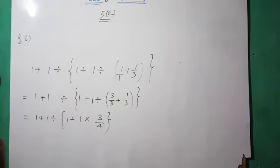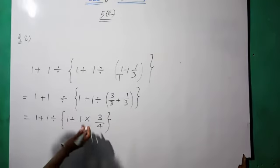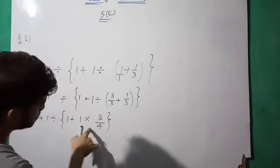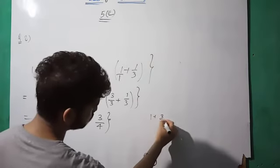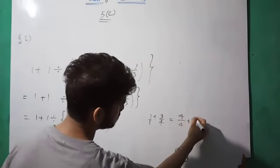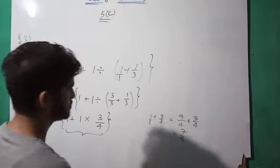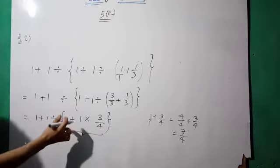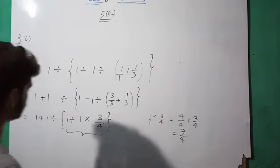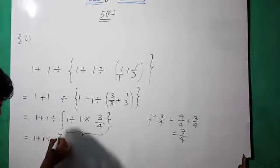We divide, so take the reciprocal — multiply by three by four. One into three by four is three by four. Now we add one plus three by four: take LCM, which is four, giving four by four plus three by four. That equals seven by four. So this bracket simplifies to seven by four.